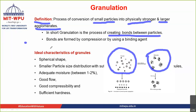So you have one particle here, another particle, another particle, and another particle. What granulation does is it creates a bond between these particles. A granule is formed when the particles bind to each other. It is nothing but the conversion of smaller particles into a larger particle which is stronger and more flowable. In short, it is the process of creating bonds between the particles.